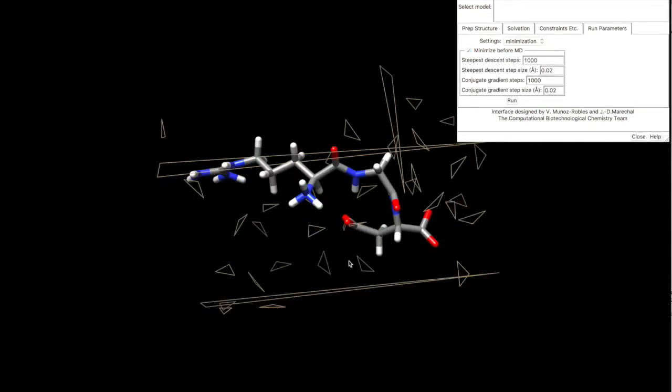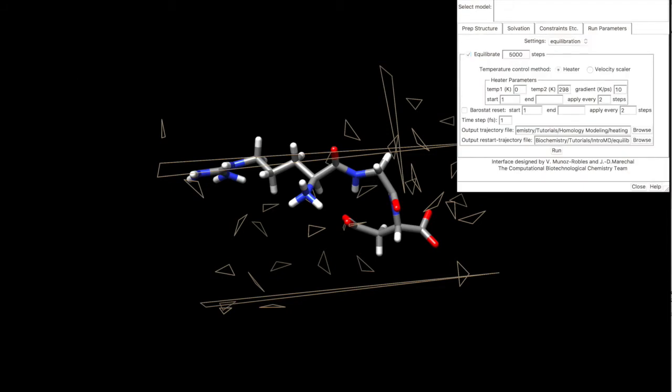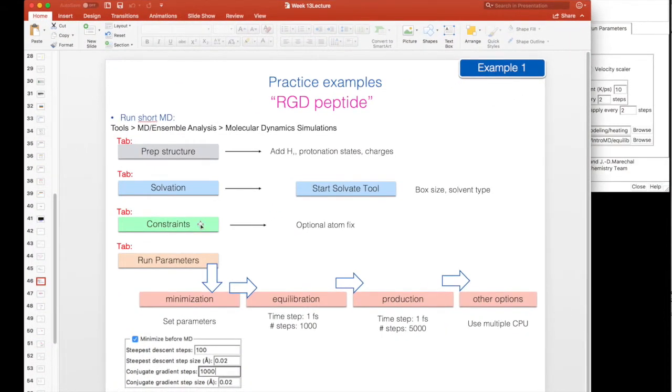Once our minimization finishes, we can move on to another step, which will be the equilibration. And let me remind you what is happening right now, so we have minimization, we have equilibration, we have production, which is the actual simulation time, and we have to select some other options later on.